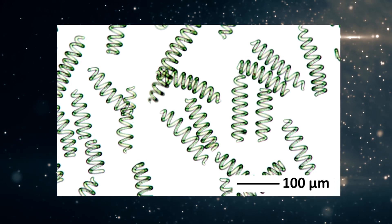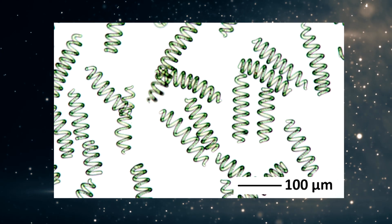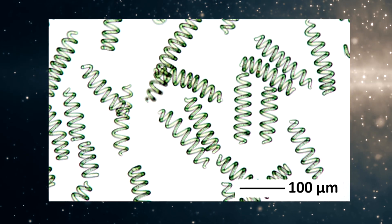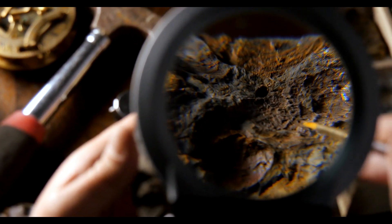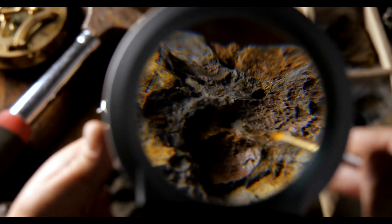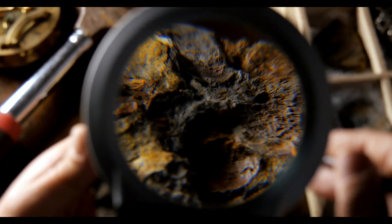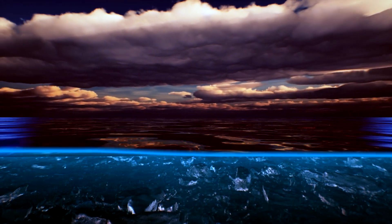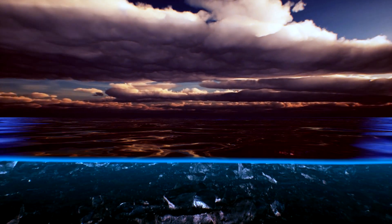Cyanobacteria like spirulina are very curious organisms for another reason — they are billions of years old. Scientists have found fossils that date back to at least 3.6 billion years, making them very likely the very first photosynthetically active organism on the planet, responsible for the first 10 to 12 percent of oxygen in the atmosphere.